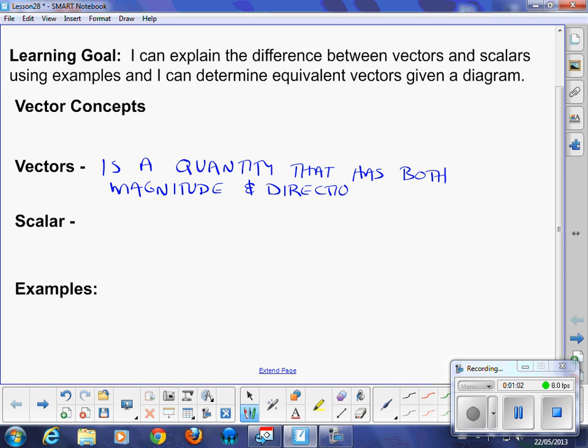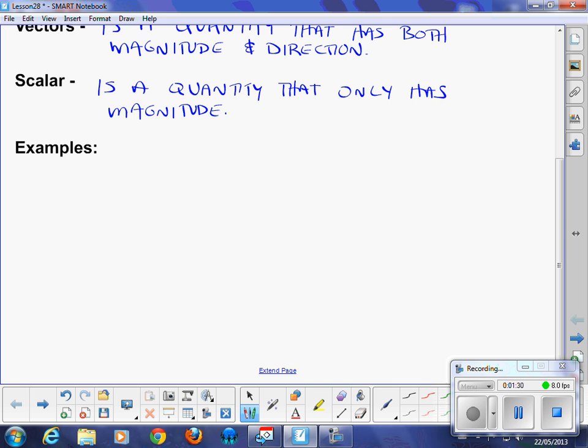When we are talking about a vector, we are talking about something that has a magnitude or a length or some factor, and then it also points in a particular direction. Its counterpart, scalar, is a quantity that only has magnitude.